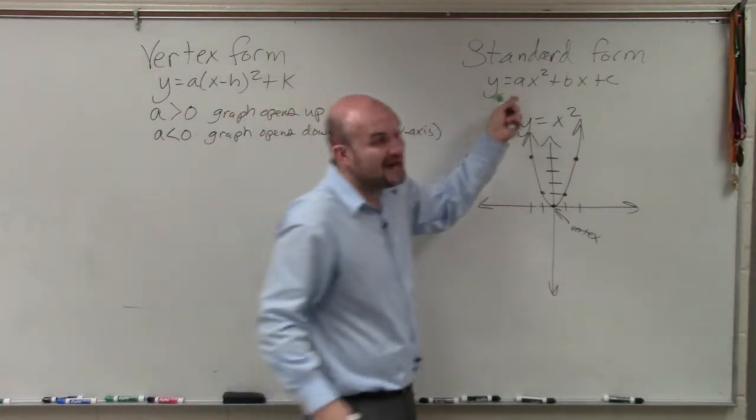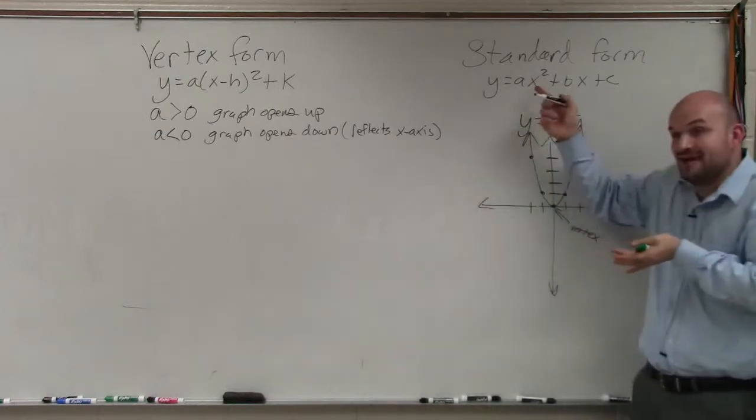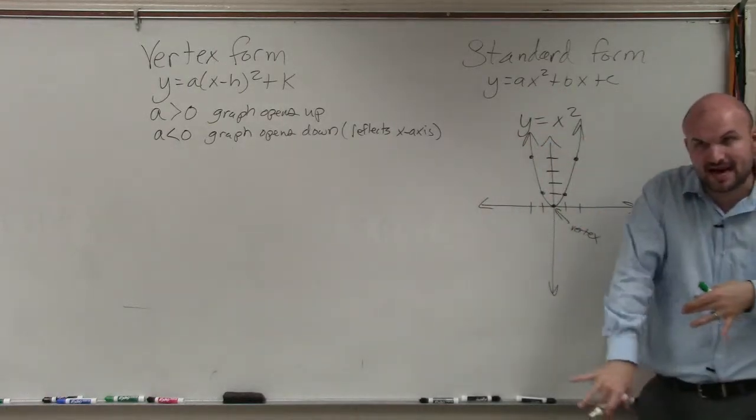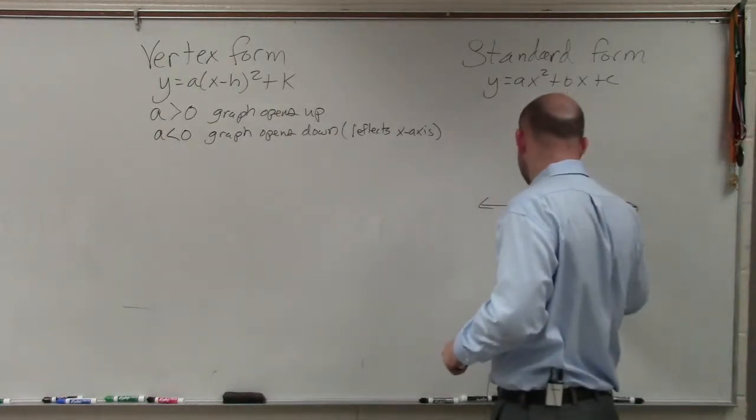Or what we say, it reflects the x-axis. And that was the exact same thing over here. Right? If we had a graph that was negative, of negative A, we know that graph would reflect down. Right? It would look something like this.